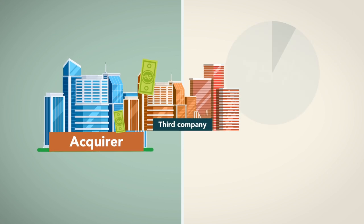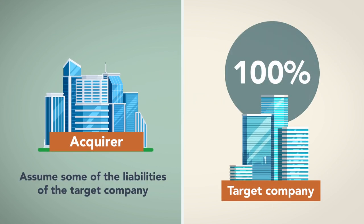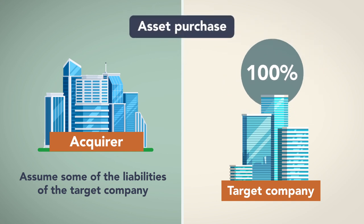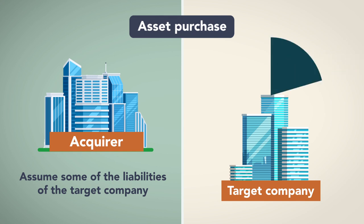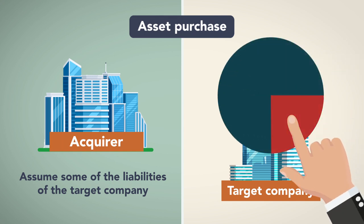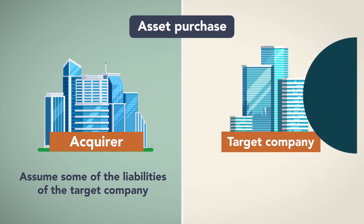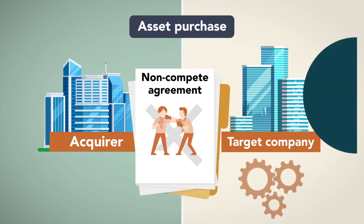In the alternative, an acquirer may buy some or all of the assets and perhaps assume some of the liabilities of the target company. This type of acquisition structure is referred to as an asset purchase and is a common tool in the acquisition of a private, non-public company. Unlike the stock-for-stock acquisition structure, in an asset purchase, the acquirer may decide to pick and choose what assets to acquire and which liabilities it will assume. In an asset purchase acquisition, the target company may continue in business using different assets, though the acquirer will typically insist on including a non-compete agreement to ensure the target does not compete with the acquirer after the acquisition.